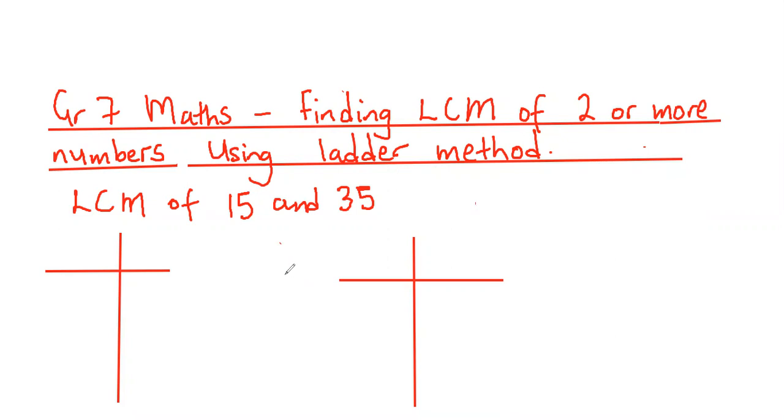In our case we have two numbers, 15 and 35, and we want to find the lowest common multiple of 15 and 35. To do that we have to first express each number as a product of its prime factors using the ladder method.